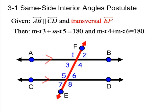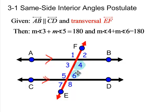The same-side interior angles postulate: if we're given line AB and CD, and we're given that they're parallel — there's the parallel symbol — and a transversal EF, then the postulate states that the same-side interior angles are supplementary. So angle 3 plus angle 5 equals 180 degrees, and likewise angle 4 and angle 6 are same-side interior angles and they're going to add up to 180 degrees.